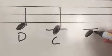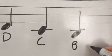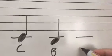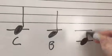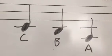I'm going to put it below the line this time to make a B. And then I can even write two ledger lines to go all the way down to an A.